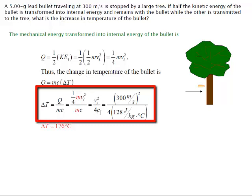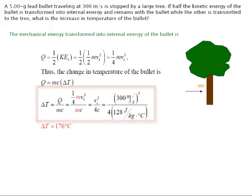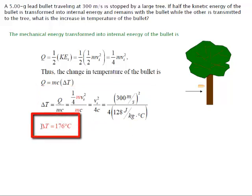Now we just populate our values: 300 meters per second squared divided by four times the specific heat. The specific heat in this case would be the wood in the tree: 128 joules per kilogram times the temperature in Celsius or centigrade. And when we run that through our relationships, we end up with a change in temperature of 176 degrees Celsius.